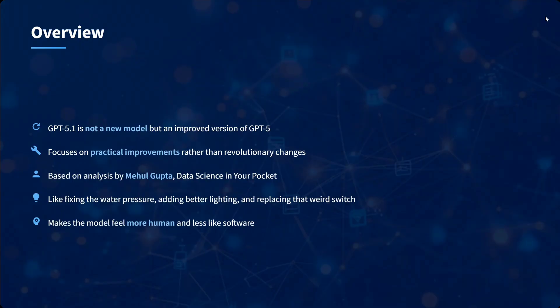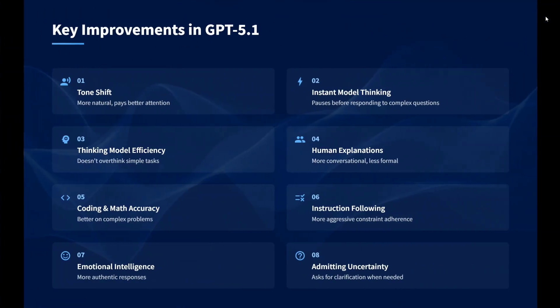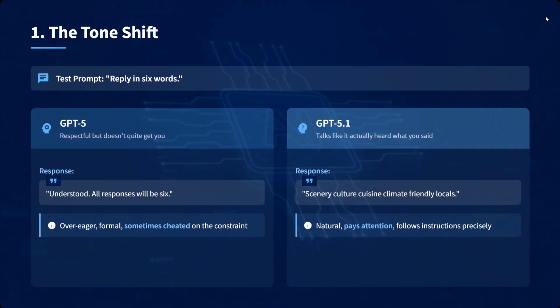GPT-5.1 makes the model feel more human and less like software. Key improvements include: tone shift with a warmer Instant model, a wiser Thinking model with better efficiency, more human-like explanations, improved coding and math, better instruction following, stronger emotional intelligence, and admitting uncertainty when it's not sure.